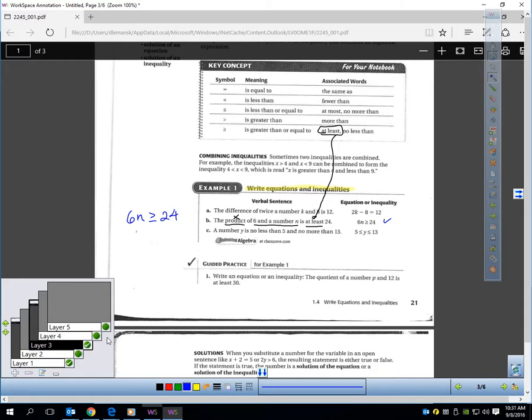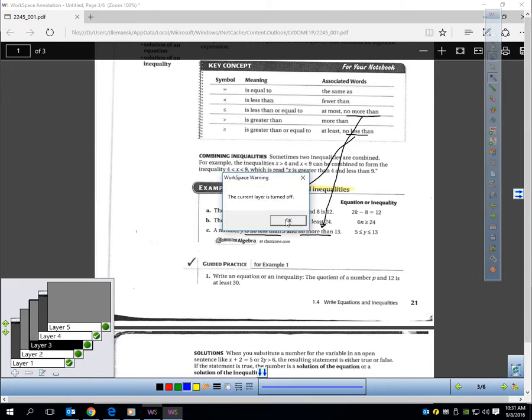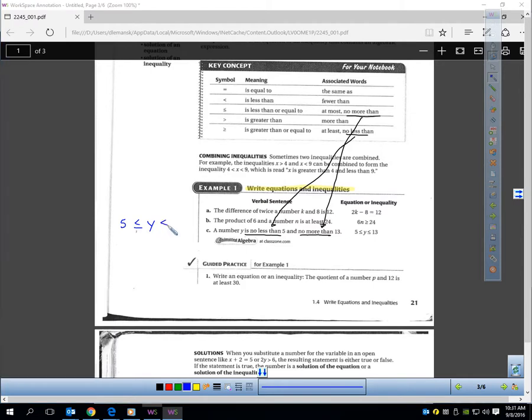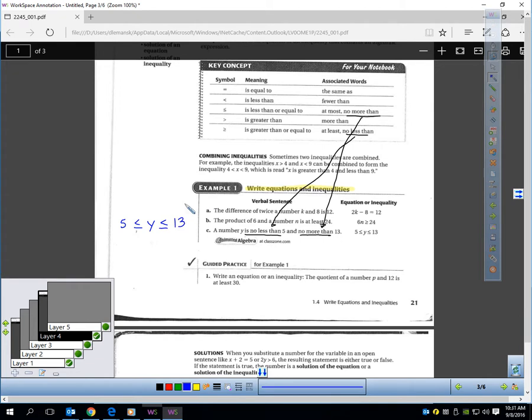Let's do another one. Let's go to the third one. A number y is no less than 5. So, that means it's bigger than 5. And no more than 13, which means it's smaller than 13. So, I have y in the middle. Y needs to be bigger than 5 or equal. So, the alligator's eating y when we're comparing it to 5. But, when we compare it to 13, it can be no more than 13.